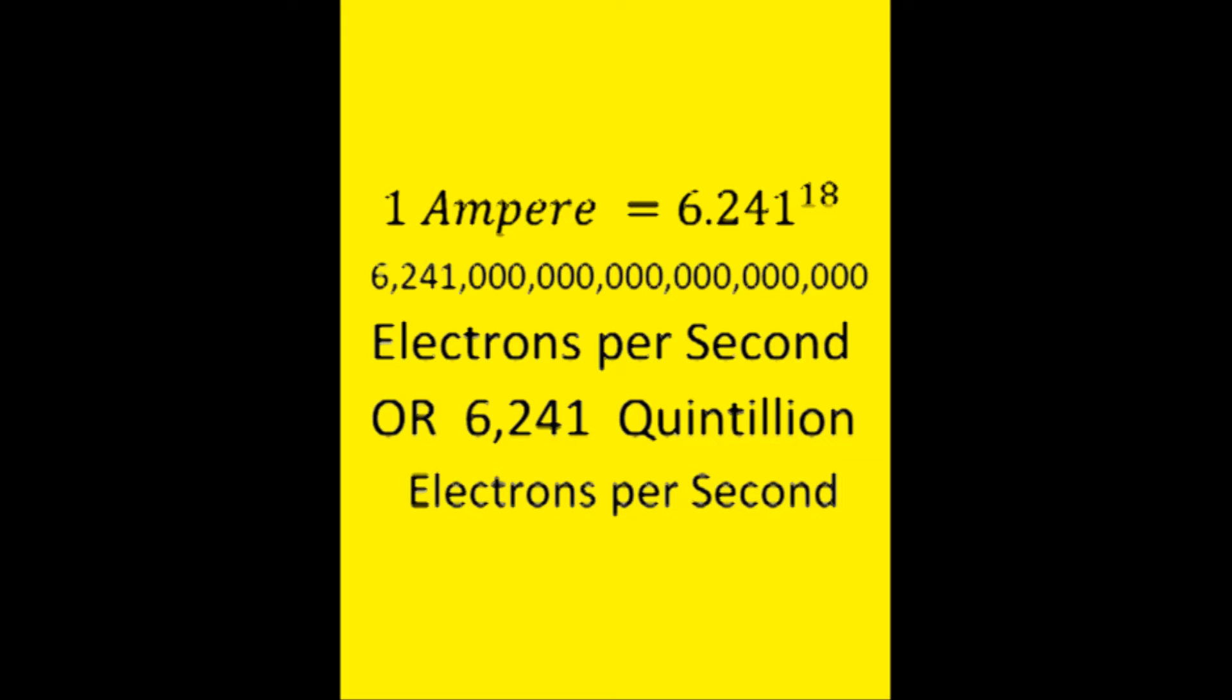You can look at this two other ways: that is 6.241 billion billion, or 6.241 quintillion electrons moving past the conductor in one second.